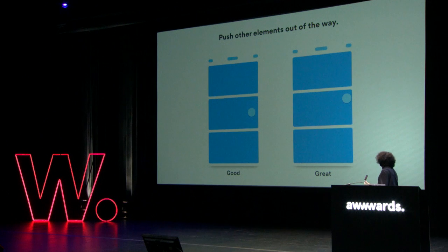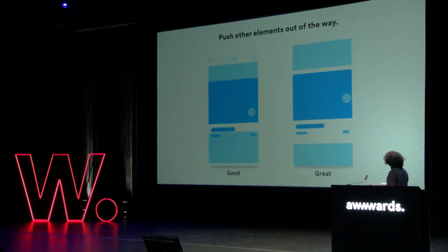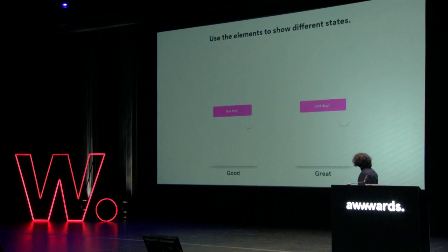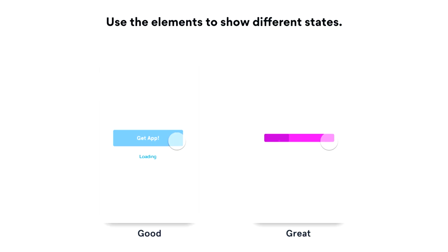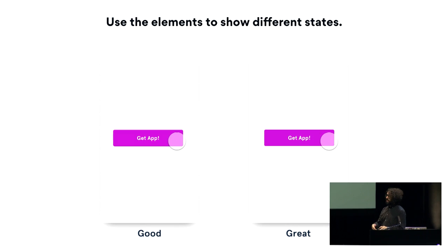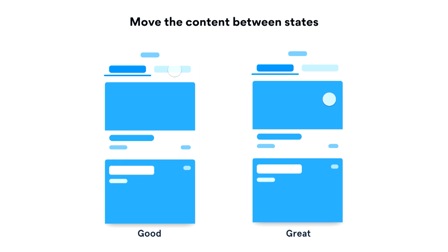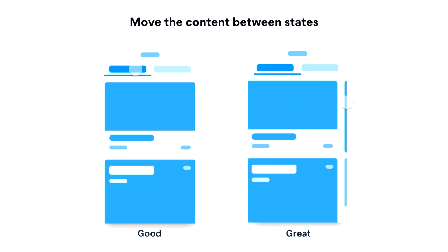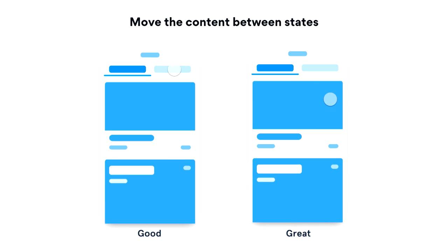Good animation is smooth and shows elements in context — elements push other elements out of the way instead of appearing on top. Another tip: use the same element you interacted with to give feedback — instead of a new element appearing, that same element tells you 'something is loading' or 'give me a little bit of time.' And great animation shows continuity in transitions by making content move between states — the element feels like it was always there; you move it and it appears, rather than appearing out of nowhere.